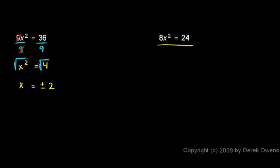Over here I have 8x squared equals 24, so I'll divide each side by 8, and the 8's cancel out on the left, leaving me with x squared equals 24 divided by 8, which is 3.